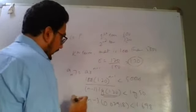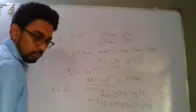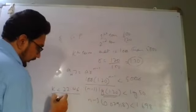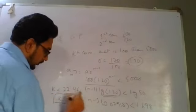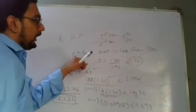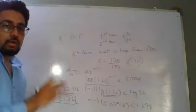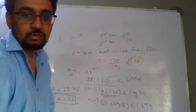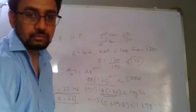So the final value that we are getting is K is less than 22.46. So it means that K equals 22. That is the largest value that K term is less than 5000. I hope that you have understood this question. This is very important for the exam. This is the end of this session. Thank you.